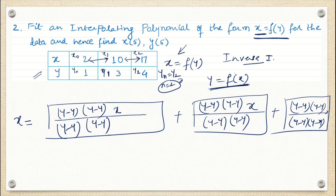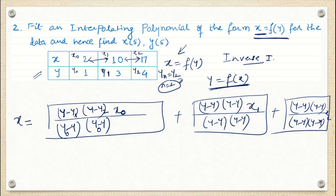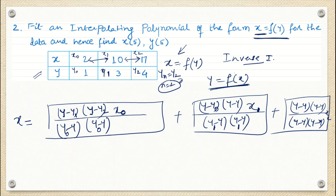For the first term with x0, the numerator has y minus y1 and y minus y2, and denominator has y0 minus y1 and y0 minus y2. For the second term with x1, numerator has y minus y0 and y minus y2, denominator has y1 minus y0 and y1 minus y2. For the third term with x2, it's y0 and y1 used in the remaining factors. This gives the Lagrange's inverse interpolation formula.